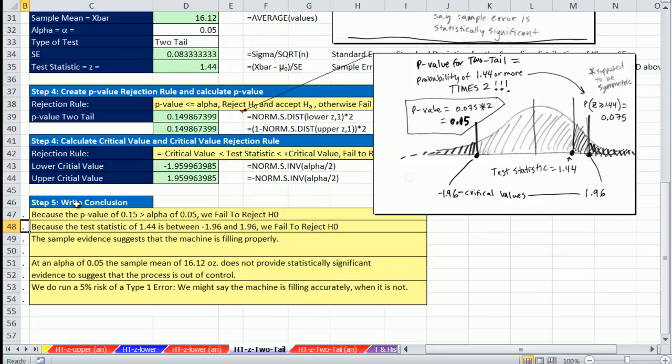Based on the p-value, because the p-value of 0.15 is greater than alpha 0.05, we fail to reject the null hypothesis. Critical value, because the test statistic of 1.44 is between our two critical values, we fail to reject h sub 0. That means the sample evidence suggests that the machine is filling properly. Said another way, at alpha of 0.05, the sample mean of 16.12 ounces does not provide statistically significant evidence to suggest that the process is out of control. In essence, our sampling error was not significant enough for us to stop the machine, take it apart, fix it. We do run a 5% risk of a type 1 error, which means we might say the machine is filling accurately when it is not.